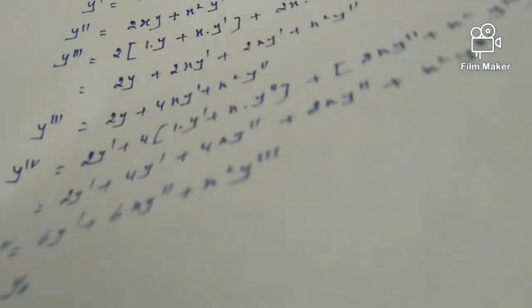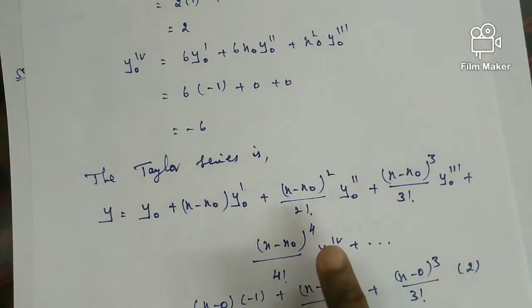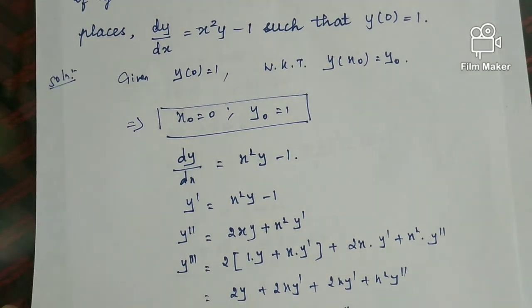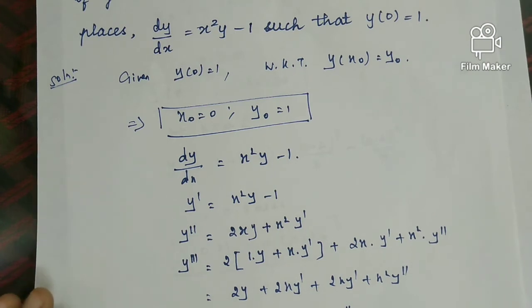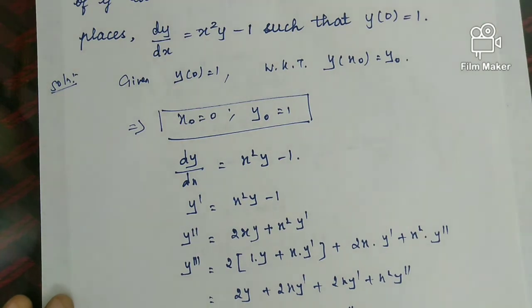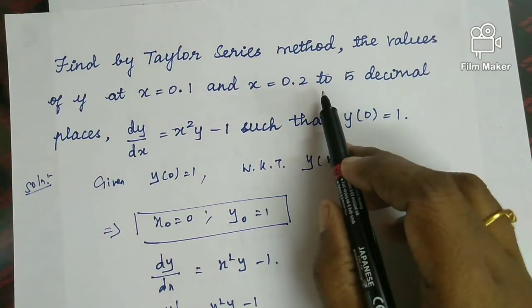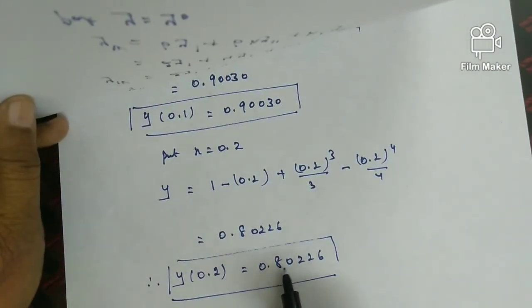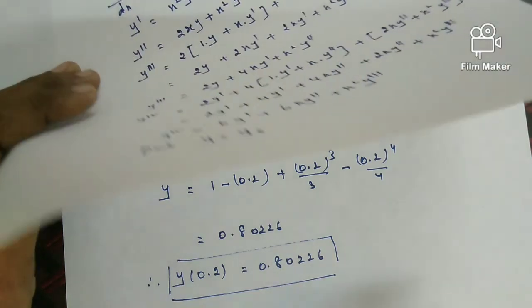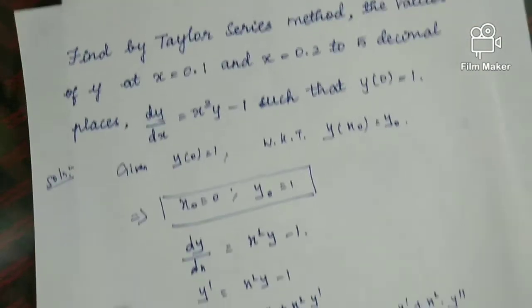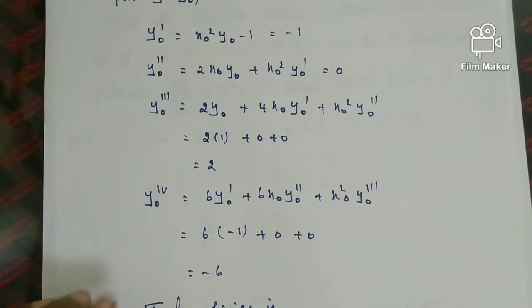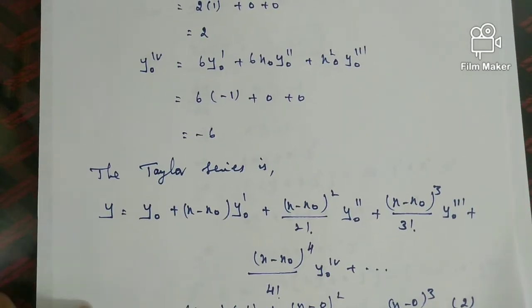This is the problem solved under the Taylor series method. Given a differential equation, we perform continuous successive differentiation, substitute x equal to x0 and y equal to y0, apply the Taylor series formula, and substitute the required points to get the result. Unit 4 covers various such methods for solving initial value problems for ordinary differential equations.